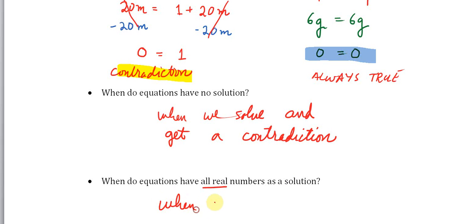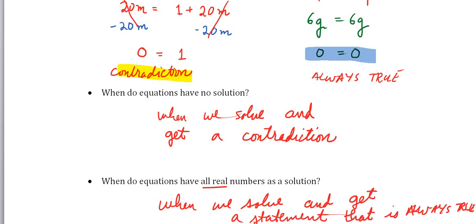When do equations have all real numbers? When we solve and get a statement that is always true. When we solve an equation and get a statement that's always true, that means the equation has all real numbers as solutions. When we get a contradiction, there is no solution.